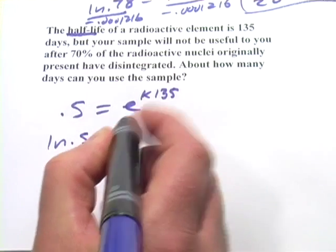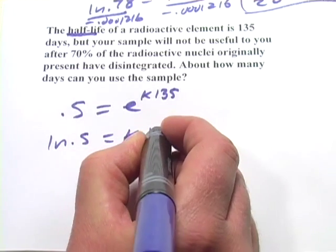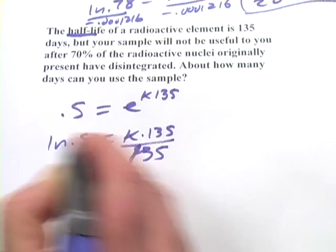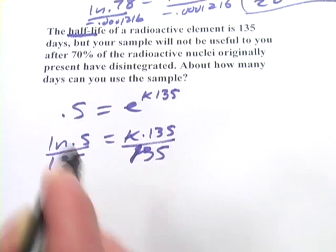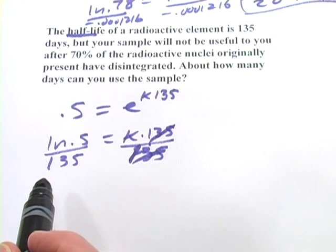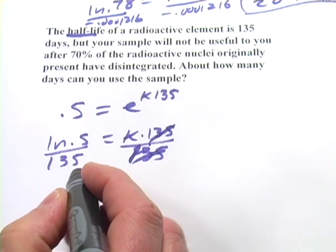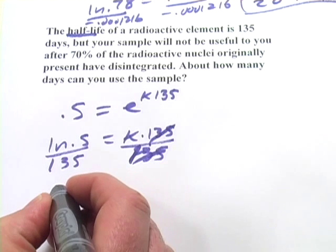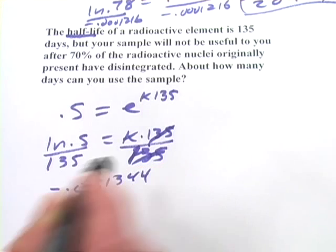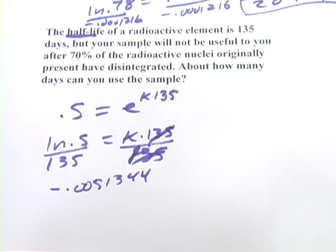Take the natural log of both sides. And we find, oops, divided by 135. And we find that the k here is the natural log of 0.5 divided by 135. And if you crunch the numbers on that, I think you're going to get negative 0.0051344, or something close to that. That's k.